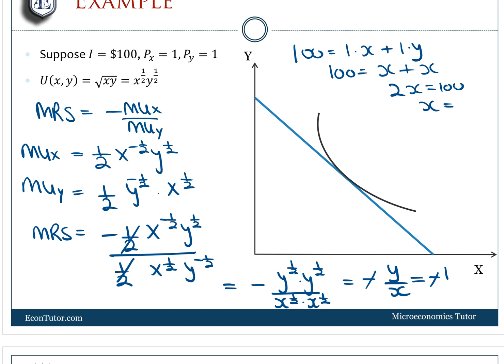So X is equal to 50, and since Y and X are equal, Y is also equal to 50. So utility maximization happens when this is 50 and this is 50. That's how you maximize utility using the tangency condition.